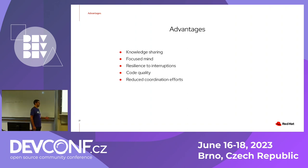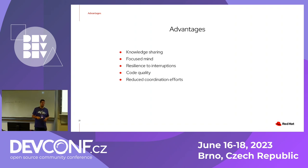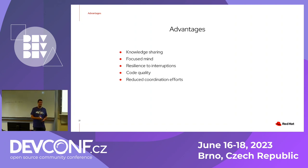One extra advantage is code quality — at the end there are two people looking at the code, and four eyeballs see more than two. We also reduced coordination efforts. When working together in a pair programming session, everyone is aware of the context. So if someone asks about the status of an issue, you don't need the sole developer to reply — you can answer too because you already know the context.